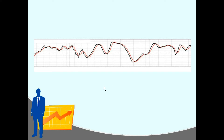It's an overbought and oversold indicator. The bottom line represents zero — the line never goes below zero — and the top line represents 100 — it never goes above 100. This dotted line is 50, that's the midline, and that means the price is about average where it normally would be.